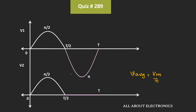In this case, the peak value is Vm/2. So we can say that for V2, the average value is equal to (Vm/2) divided by π, which is equal to 0.5. Similarly, let's now find the average value of V1.